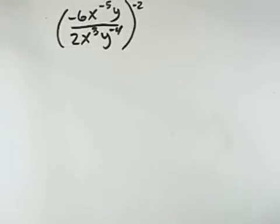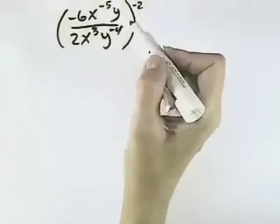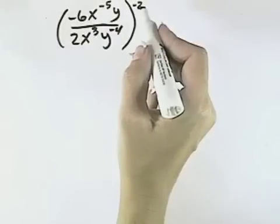We want to simplify this exponential expression. We have a lot of choices. We could simplify the inside first, or we could distribute the negative 2 exponent on the outside through the whole thing. I'm going to choose to simplify the inside first.